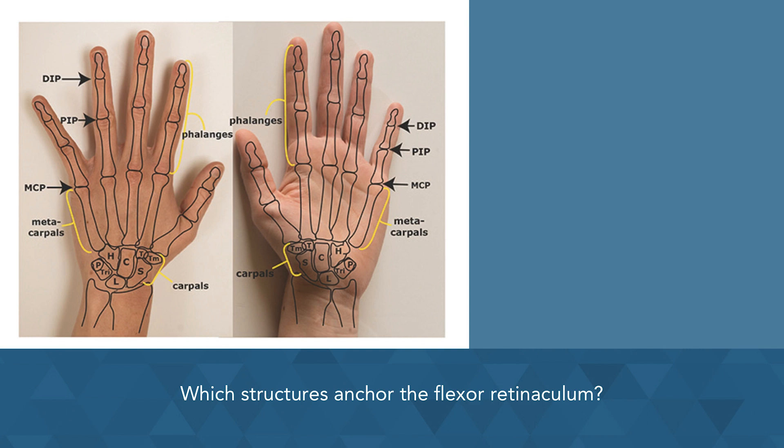On the radial side, it attaches to the tubercle of the scaphoid bone and the ridge of the trapezium bone. To summarize: on the lateral side it attaches to the tubercles of the scaphoid and trapezium, and on the medial side to the pisiform and hook of hamate.